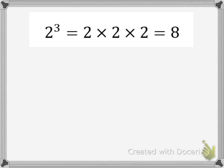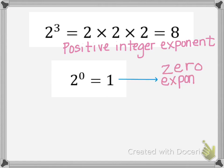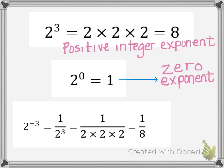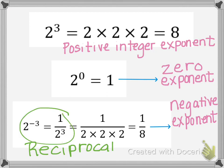Let's recap. For a positive integer exponent: 2 to the third power means 3 factors of 2, which multiplies to 8. The zero exponent rule: any base raised to the zero power is always 1. For the negative exponent rule: think reciprocal. So 2 to the negative third power is equivalent to 1 over 2 to the positive third power — the negative exponent becomes positive.